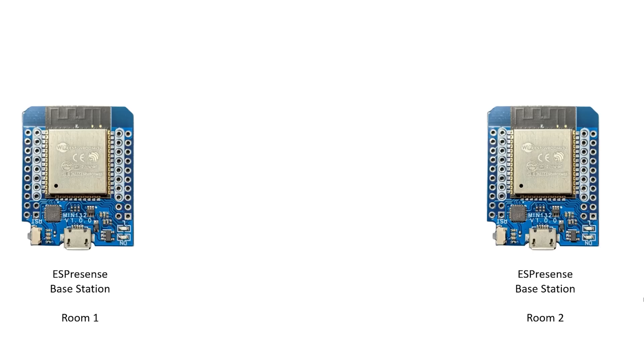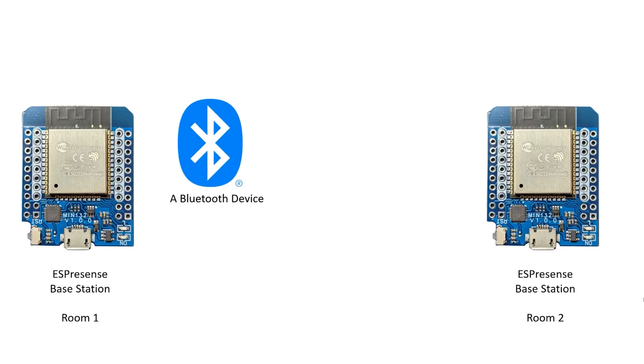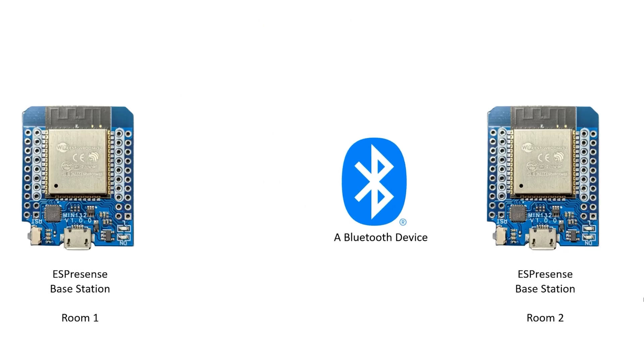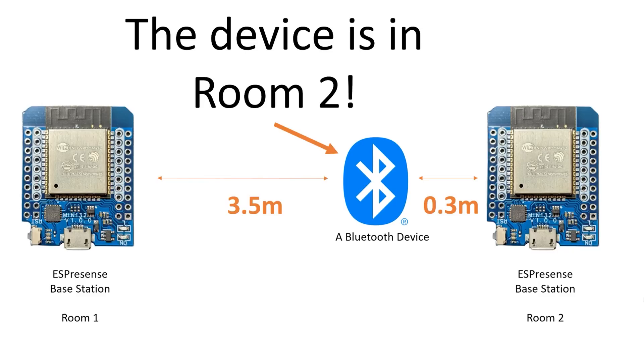Before we look at setting this up, let's first go over what ESPresence is and how it works. ESPresence is an open source system that measures the strength of Bluetooth signals from smart devices in order to determine how far away they are. If you have two rooms, each with an ESPresence base station, it can work out which of them is closest to a Bluetooth device and use that to infer which room that device is in.